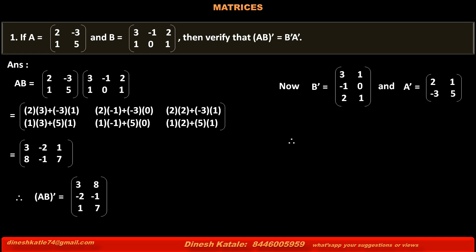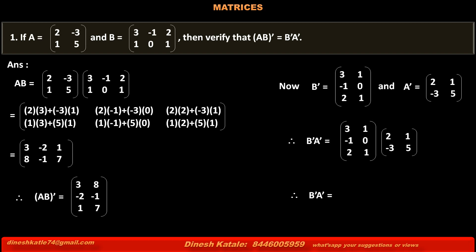Therefore, the product of matrices B'A' is equal to matrix B' having order 3×2 with elements 3, 1, -1, 0, 2, 1 into matrix A' with order 2×2 having elements 2, 1, -3, 5. Solving the product of these two matrices, we get the matrix of order 3×2 with elements 3, 8, -2, -1, 1, 7. Therefore, matrix (AB)', that is the transpose of matrix AB, is equal to B'A', that is the product of the transposes of matrices B and A.